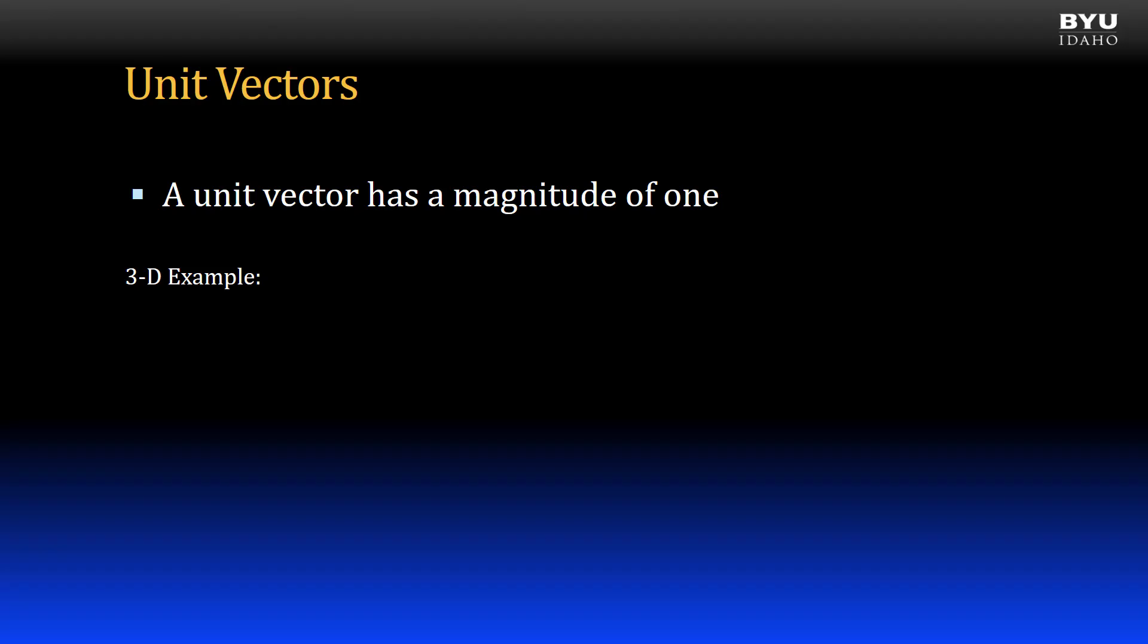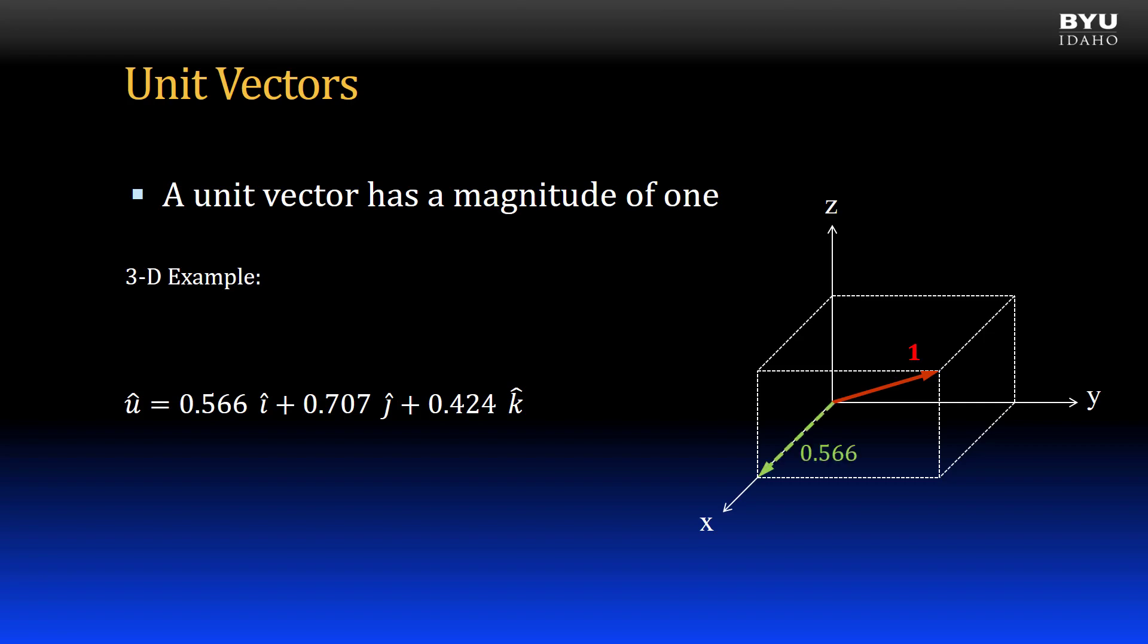Here is another example, but with a three-dimensional unit vector. Here is the vector in Cartesian notation. Here it is in a graphical representation with x, y, and z components indicated.